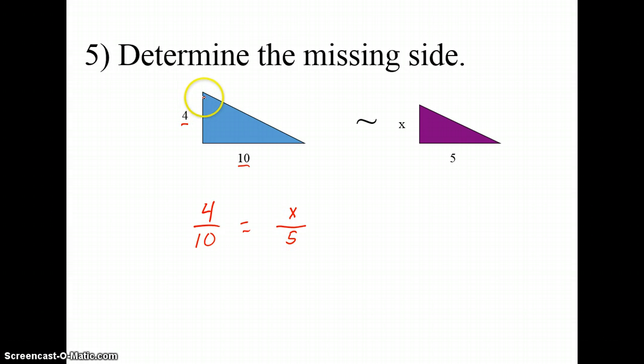Now notice, if the shorter leg, we're going to call it leg A, it needs to correspond in my proportion with the shorter leg, or leg A, of my second triangle. Once I set up the proportion, then I can just cross-multiply and solve for x. So go ahead and try it. Solve for x.